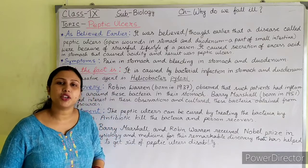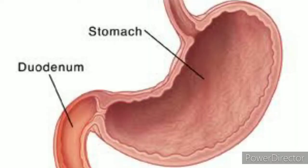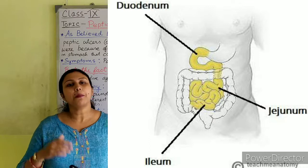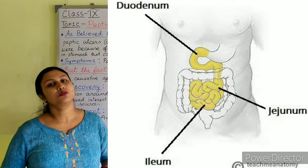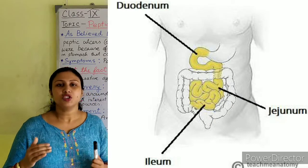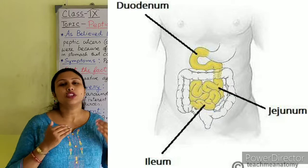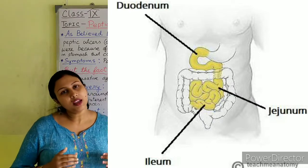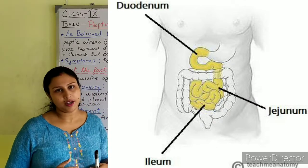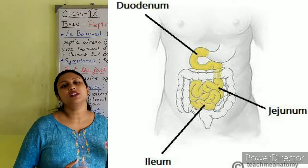Students, observe this picture carefully. In this picture you can see the stomach and the duodenum. Duodenum is the upper part of the small intestine — rather, the starting part of the small intestine after the stomach. The small intestine is divided into three parts: duodenum, jejunum, and ileum.